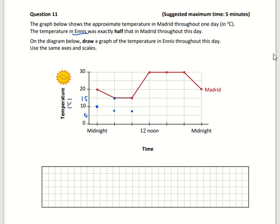Then the next one goes up to 30, so therefore half of that is 15. We just mark 15 there, and then it's the same for the next two points. And then the last one: it's 20 in Madrid, so it's 10 in Ennis.